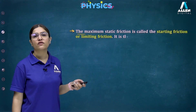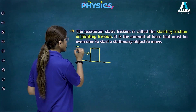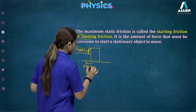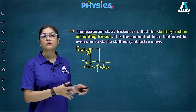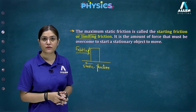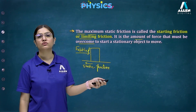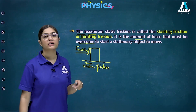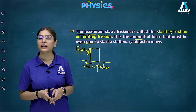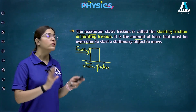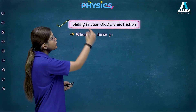The maximum static friction is called starting friction or limiting friction. It is the amount of force that must be overcome to start a stationary object moving. If a question asks for the maximum value of static friction, it is considered as starting friction or limiting friction — the threshold needed to bring an object from stationary into motion.